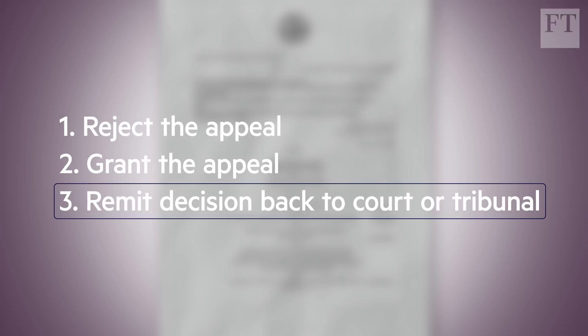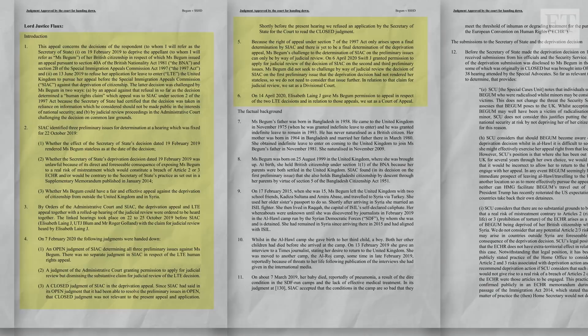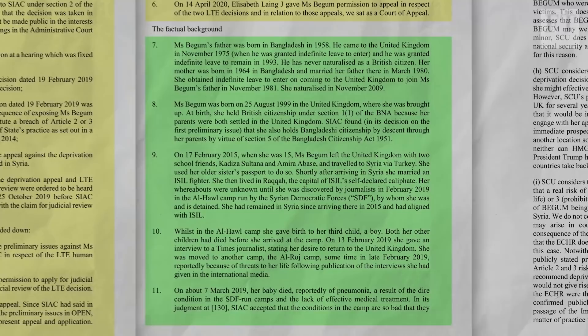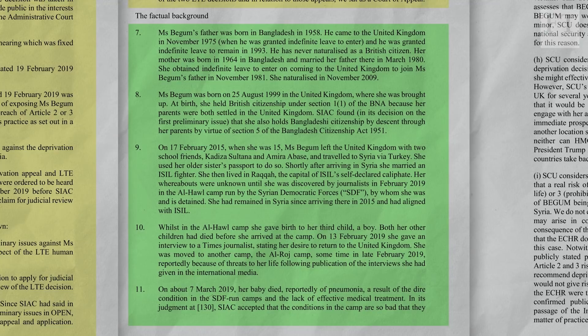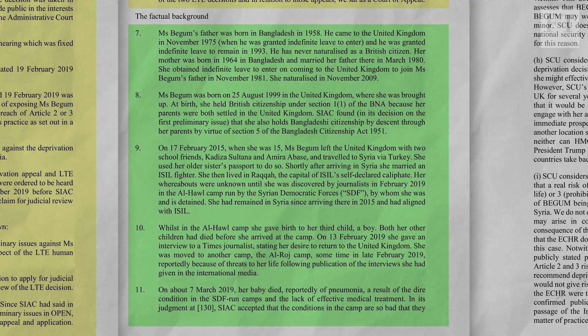The judgment is a long judgment of 129 paragraphs, but it's divided into parts. The first part is the introduction, setting out the legal issues to be decided — paragraphs one to six. Then in five short paragraphs, seven to eleven, you have the personal factual background: that she was born in the United Kingdom although her parents were born in Bangladesh; that she left the United Kingdom when she was 15; that she had three children, all of whom have died; and that she is currently in a camp in Syria. Even though this is a very lengthy judgment about a dreadful human situation, the actual factual human background just takes five brief paragraphs.